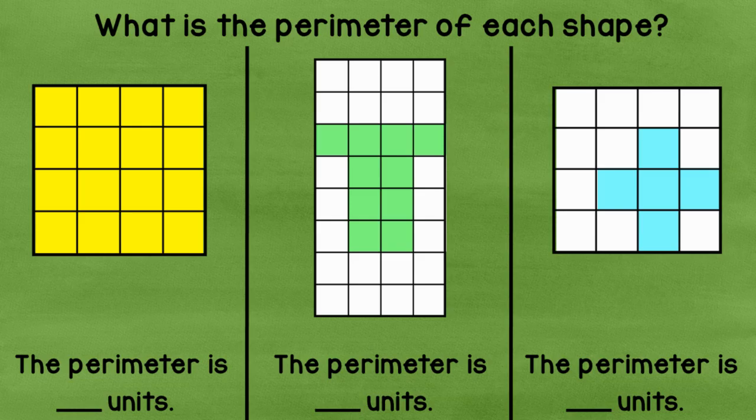Okay. Let's see if we got the same answer. So I go across the top and I've got one, two, three, four going down. Five, six, seven, eight. Across the bottom, nine, ten, eleven, twelve. And then thirteen, fourteen, fifteen, sixteen. So I would say that the perimeter is sixteen units. Is that what you got? I bet it is.